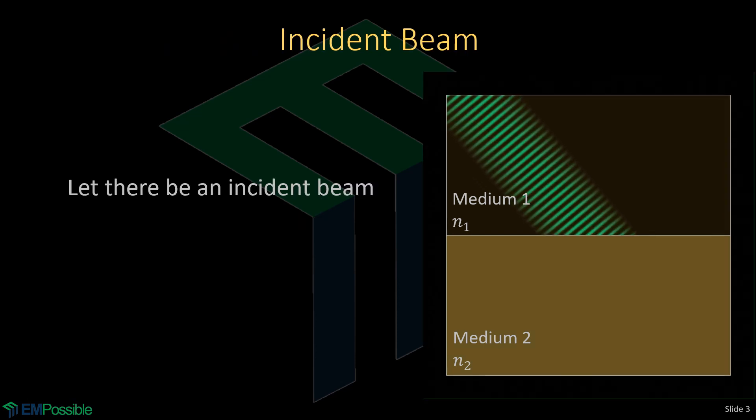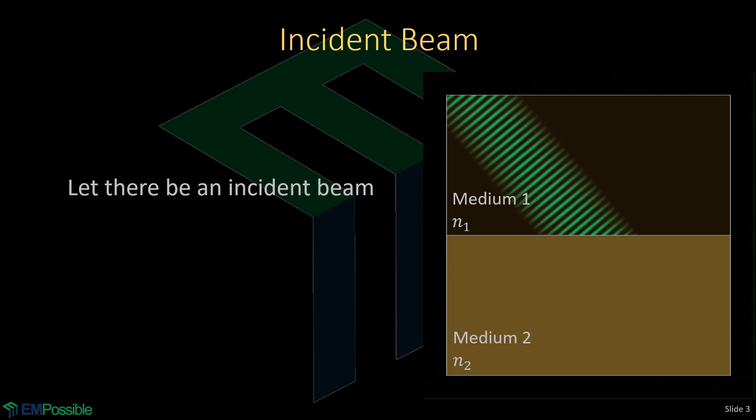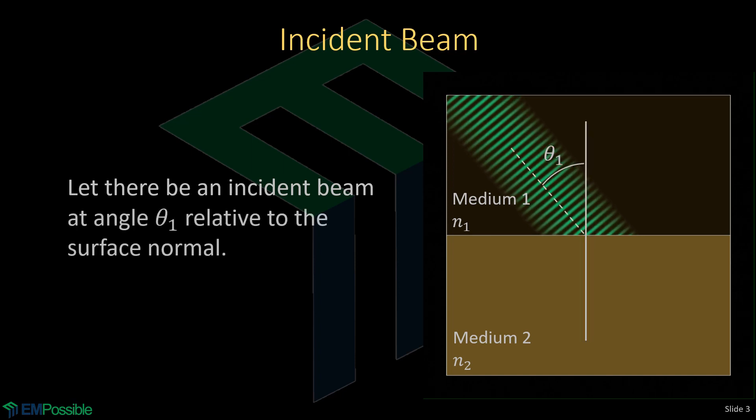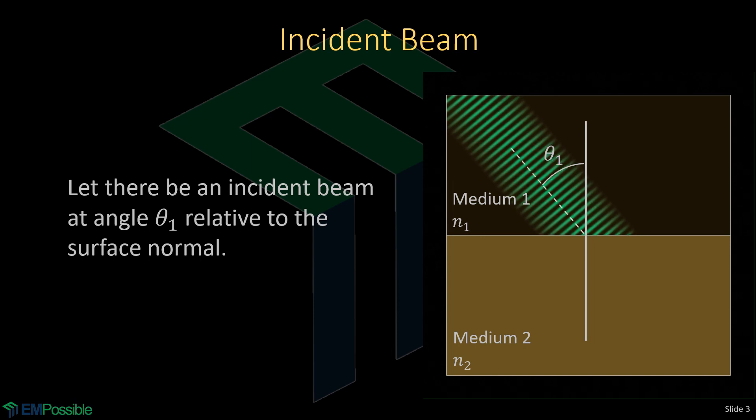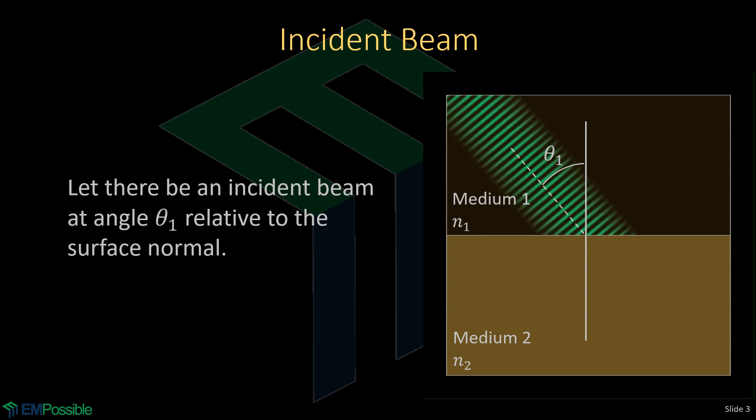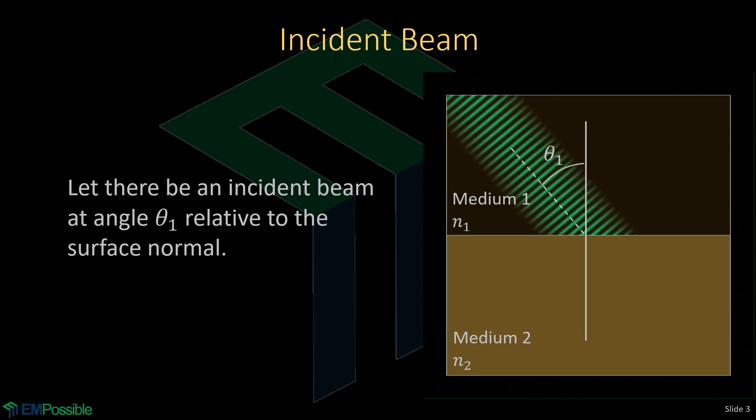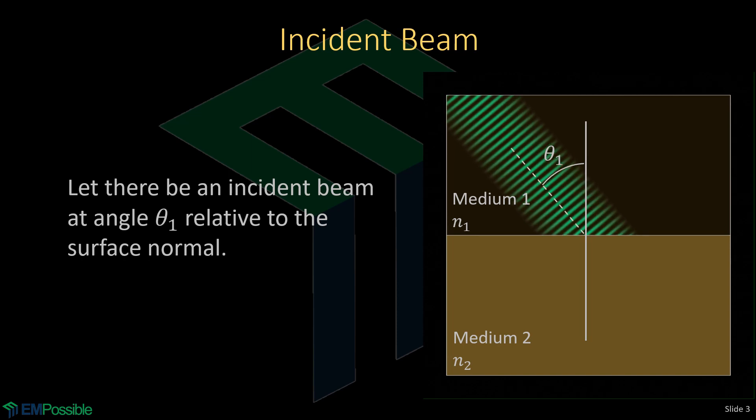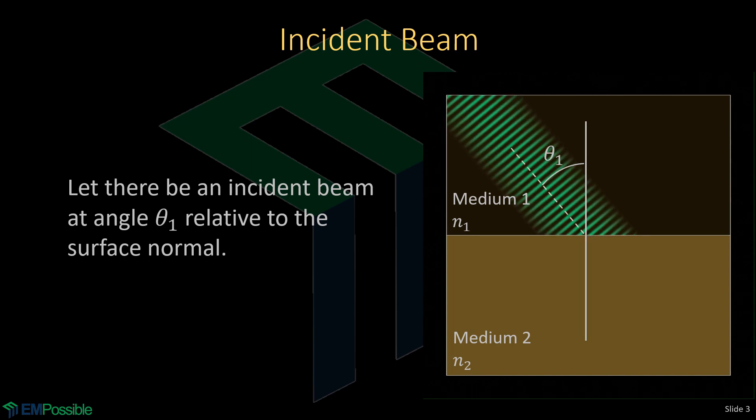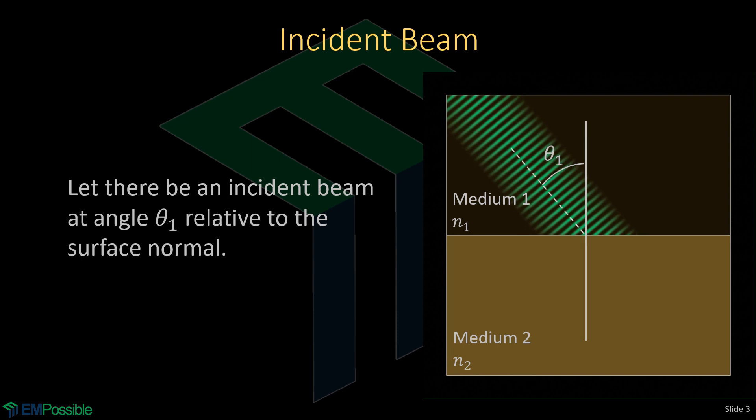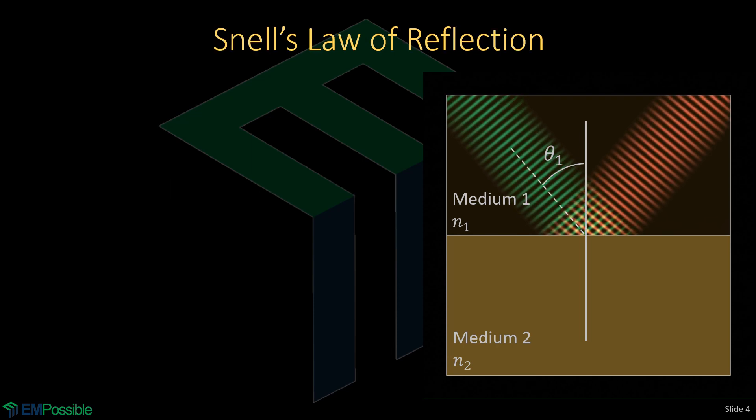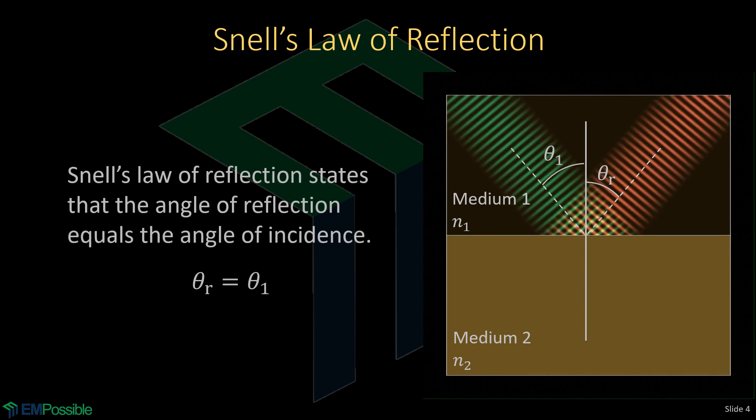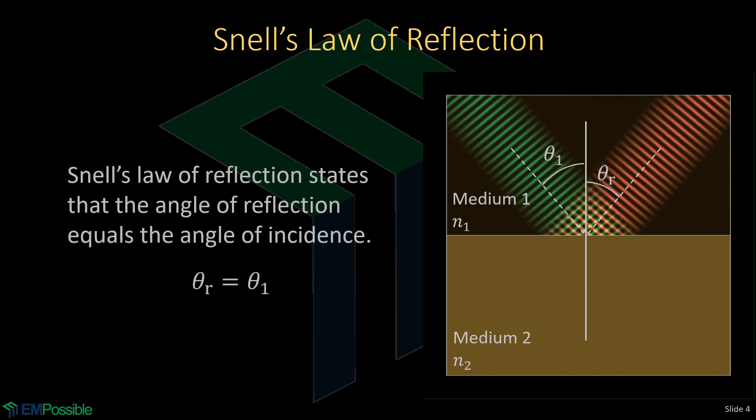Let's let there be an incident beam, and that beam is incident at an angle theta 1. This is often called the angle of incidence. When a beam is incident onto an interface, two other things happen. One, we can have a reflected wave. So we have a reflected beam, and it is at some angle theta r.